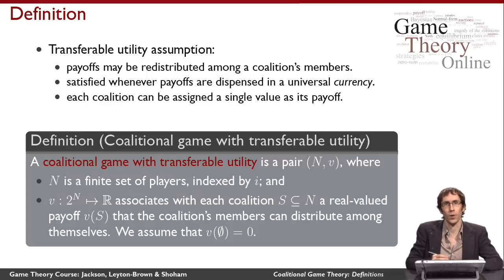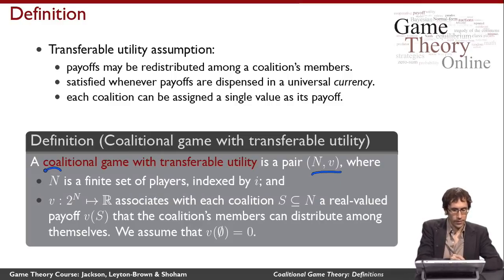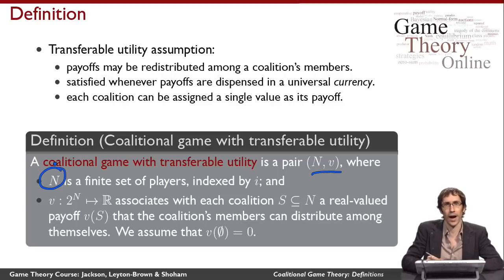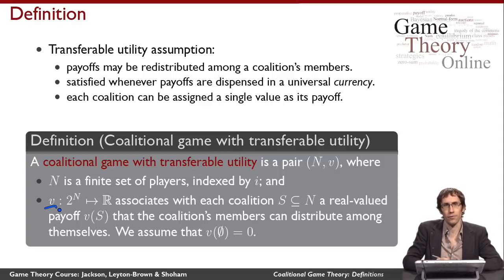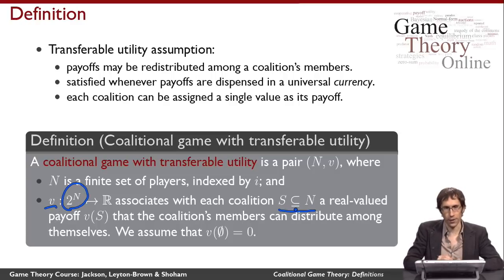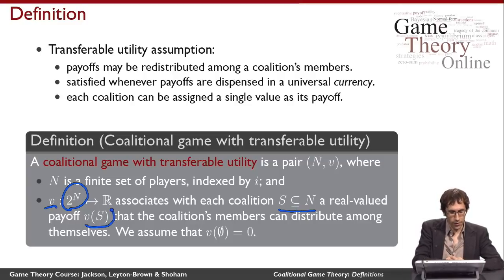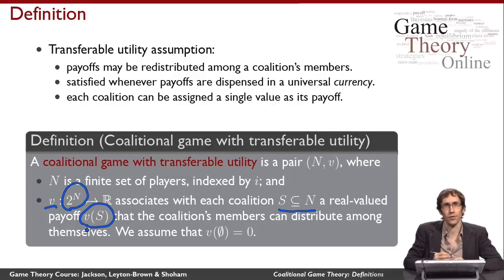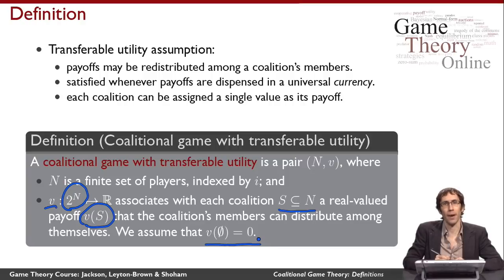Under this assumption, here's how we define a coalitional game. A coalitional game has two parts, N and V. N is a finite set of players, indexed by i when we want to talk about individual players. V acts like a utility function for the coalitional game — it says for every subset of the players S, for every coalition S that could form up to and including all of the players in the game, what is the payoff V of S that the coalition can achieve. This allows the coalition to divide the payoff among its members. We make a normalizing assumption that the value of the empty set is zero.